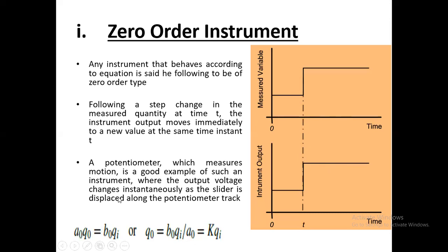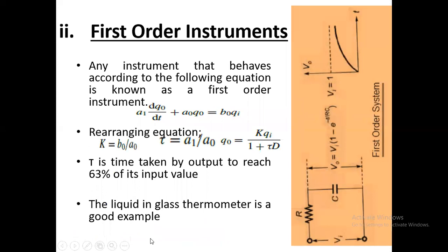A potentiometer, which measures motion, is a very good example of a zero order instrument. A potentiometer is a variable resistor — as we vary the slider position, the resistance changes proportionally and immediately. The output voltage changes instantaneously as the slider is displaced along the potentiometer track. This is the representative example of a zero order system or instrument.